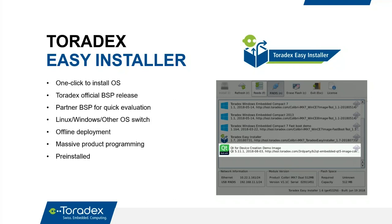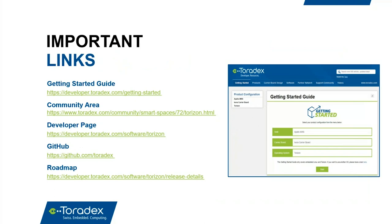Key resources include the Getting Started guide at developer.toradex.com — a step-by-step guide where you select your SOM, carrier board, and OS (embedded Linux or Torizon where supported). There are technical articles on the developer website for Torizon, a GitHub repository with all source code, and a public roadmap listing all features, known issues, and fix timelines so you can plan your project and set accurate expectations for your customers.